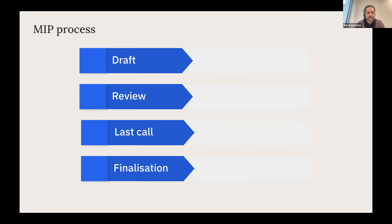If this MIP completes the process successfully, the plan is to hold a community vote on-chain next month to decide whether it should be implemented or not, and details about that vote will be published very shortly. However, MIP authors can always retract their proposal, and feedback during the review phase could result in a MIP not making it to a community vote. Any such feedback would be published by the MIP editors.